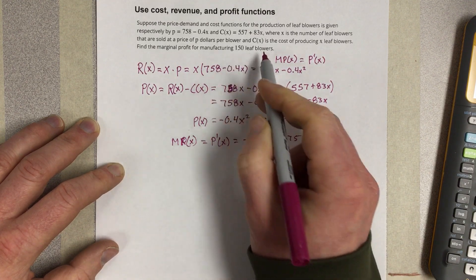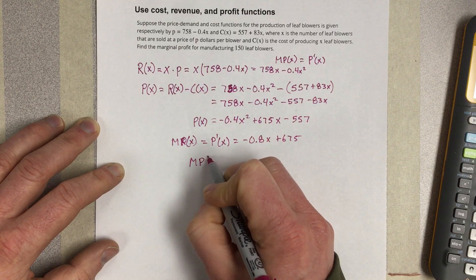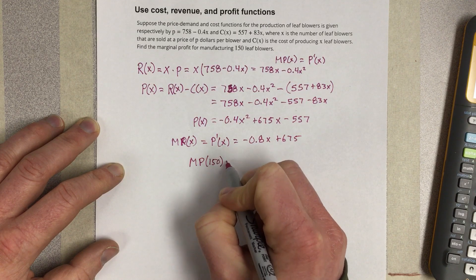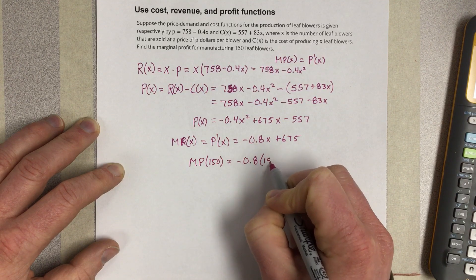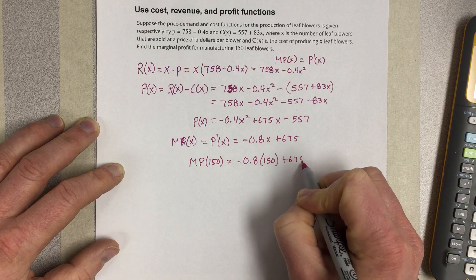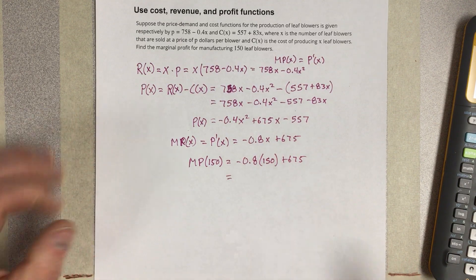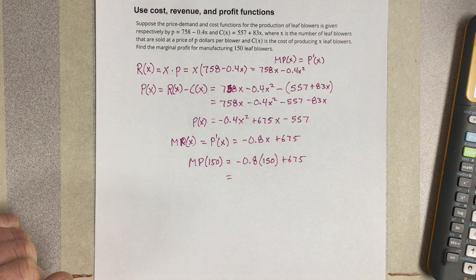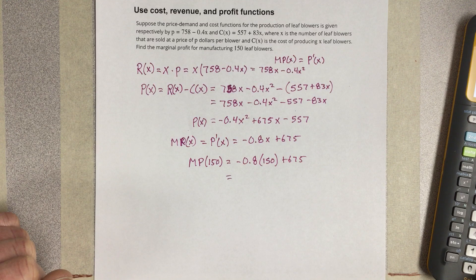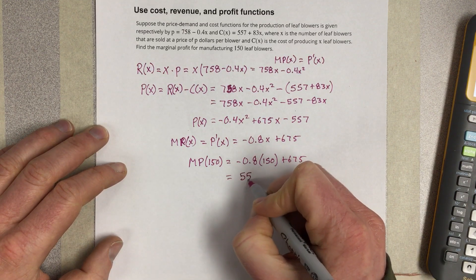They want us to find the profit after 150 leaf blowers. So I'm going to say MP of 150 is going to equal negative 0.8 times 150 plus 675. So if I go ahead and take negative 0.8 times 150, add that with 675, I get $555 for our marginal profit.